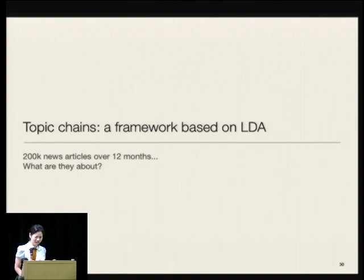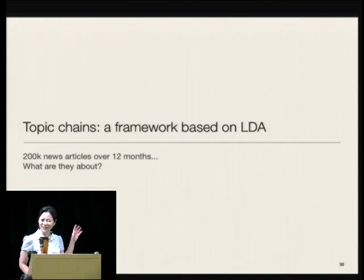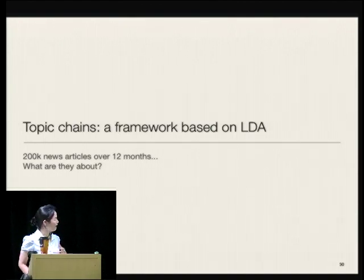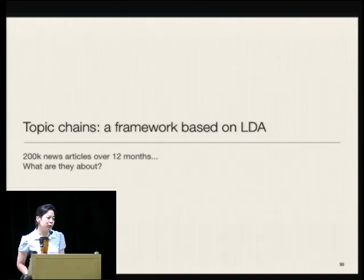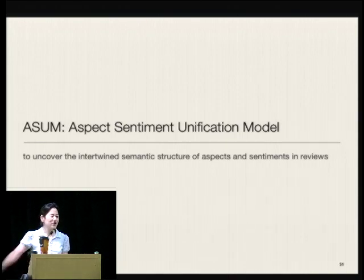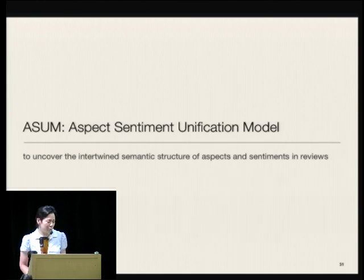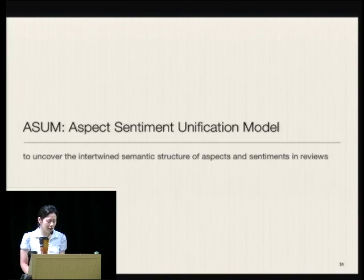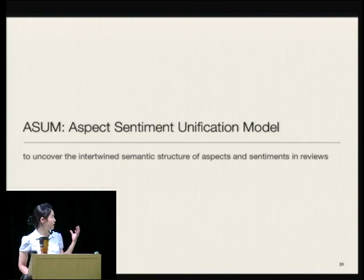That's the end of the topic chains part. We proposed topic chains as a framework based on simple LDA to understand what's going on in a news corpus. Now let me switch gears and talk about sentiment and aspects in reviews. The model is called Aspect Sentiment Unification Model, and its main purpose is to uncover the structure of aspects and sentiments in a review.